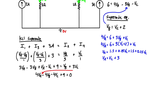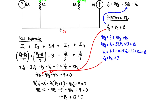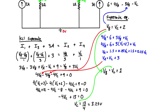Now we substitute both Va = Vc + 3 and Vb = Vc + 2 into the KCL at the supernode equation: 4(Vc + 3) − 4(Vc + 2) − 4Vc + 9 = 0. Rearranging and simplifying, we find Vc = 13/4 = 3.25 volts. Plugging back in: Vb = 3.25 + 2 = 5.25 volts.